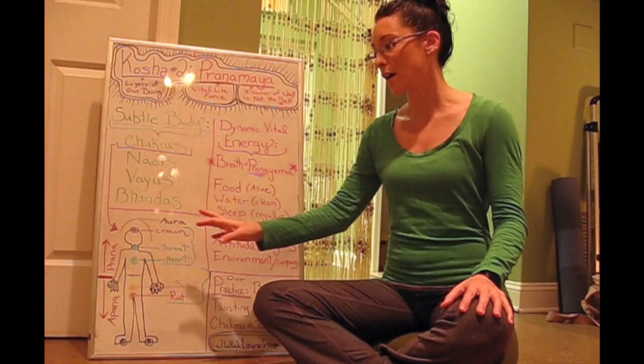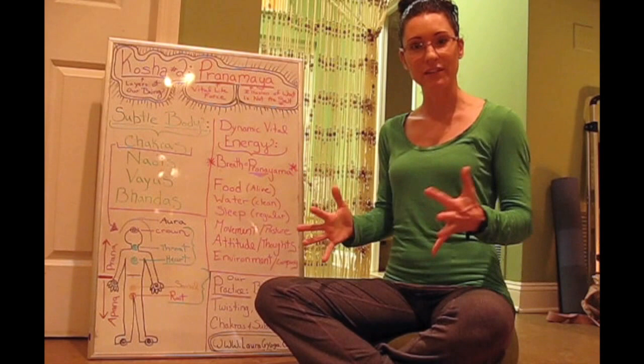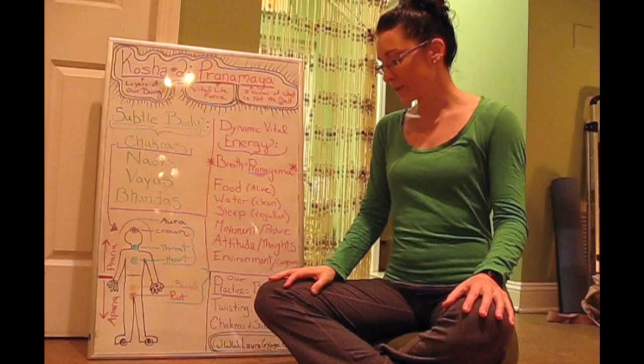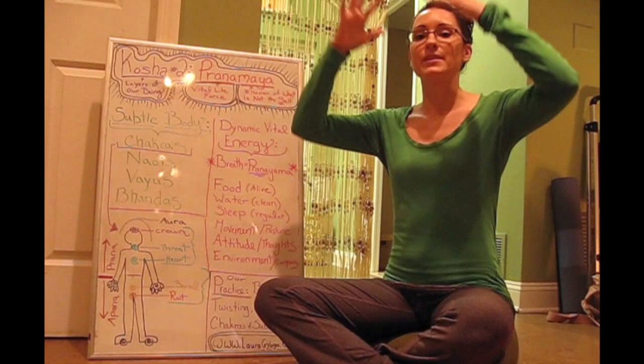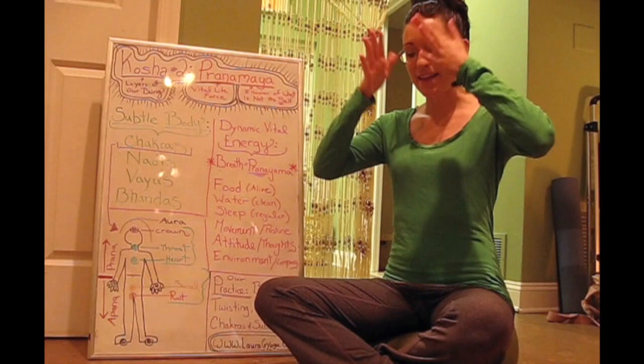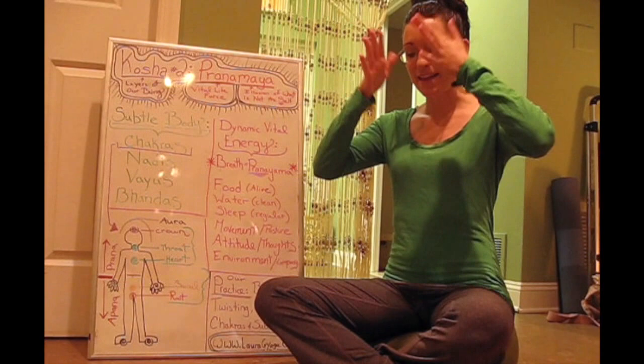It mimics the spiral of the chakras and it's a movement that breaks us out of our normal patterns of being very linear and straight. We create some fluidity to our movement and we're going to do some flows in and out of those twists as well as some sweeping movements with our arms to connect to the upward movement of prana and the downward movement of apana. So I hope that you can join us for our practice to work on the pranamaya kosha.